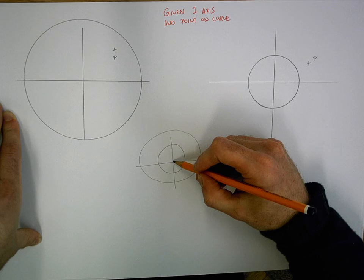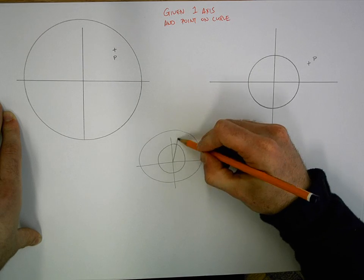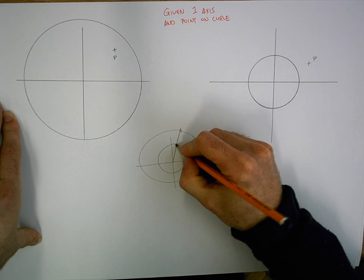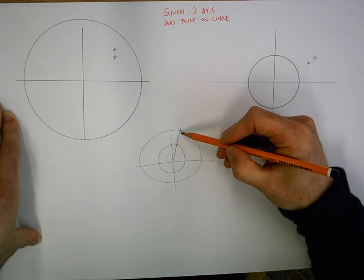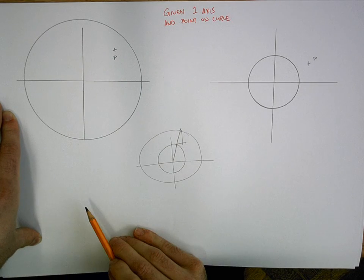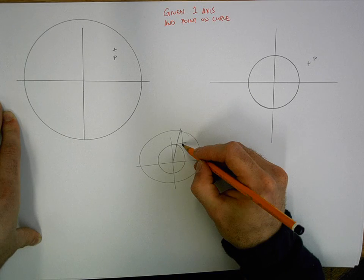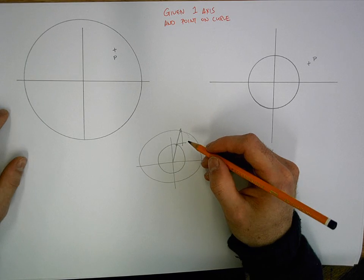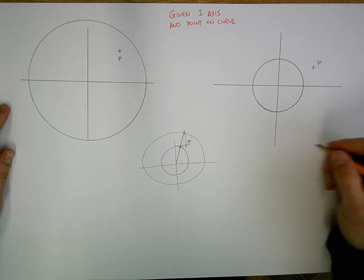If we just do one for example, you go from your center point out and it hits both of your circles. Where it hits the major one, you drop it down. Where it hits the minor one, you drop it out. And where they cross over is a point on your curve. We should all be familiar with that. We call that point P.